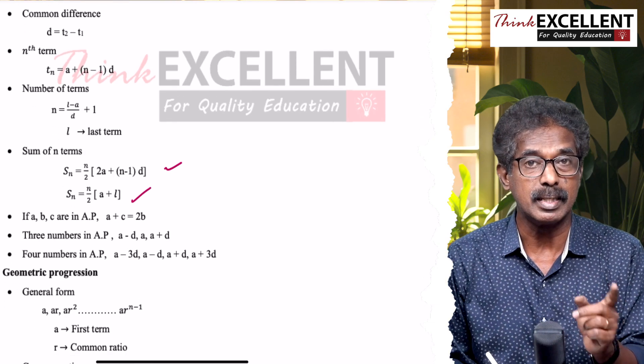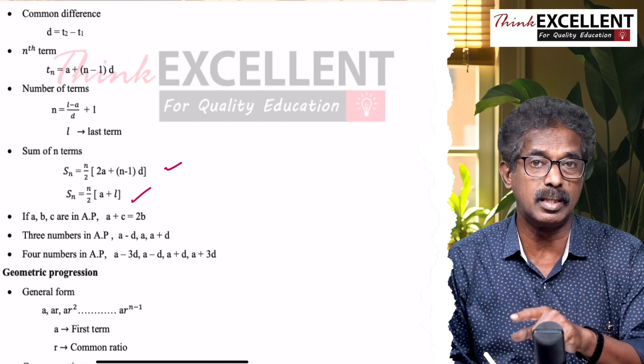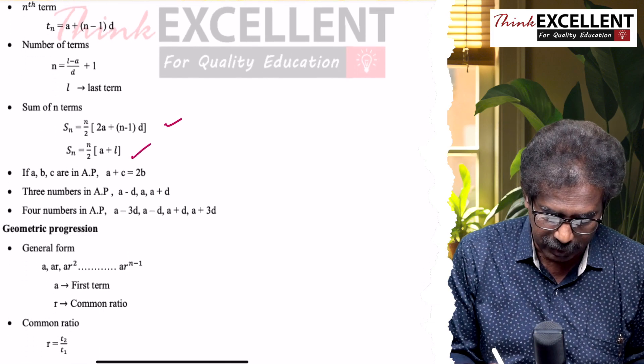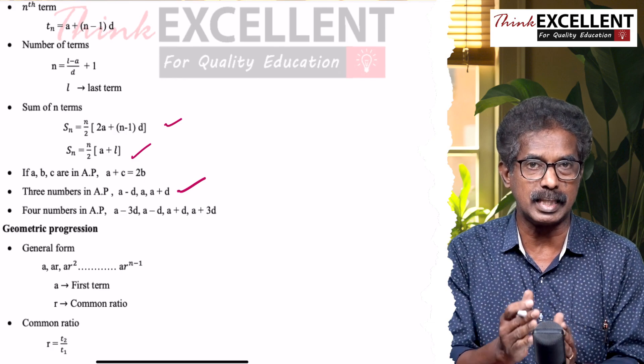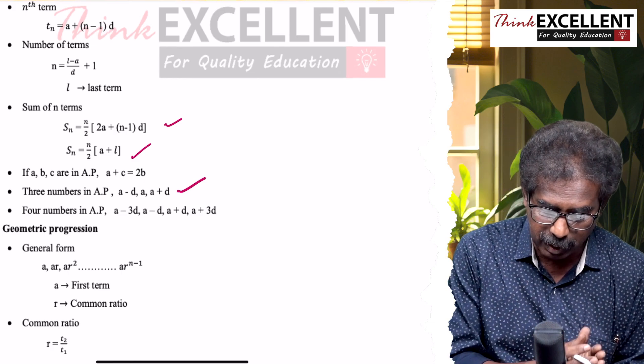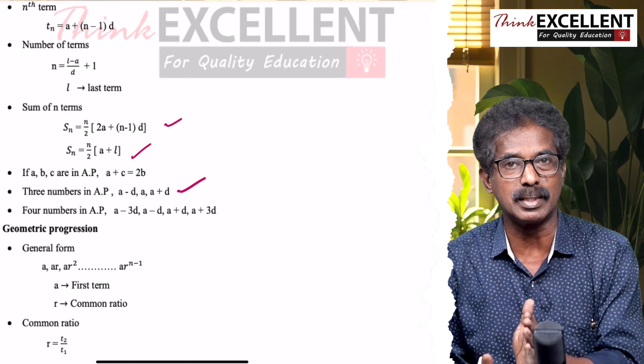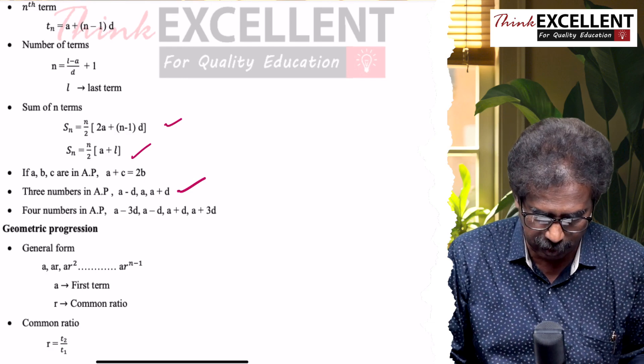Sum to n terms, there are two formulas. A and D which is one formula: n/2 × [2A + (n−1)D]. Another formula: n/2 × (A + L). Easy formula, but you know when to use. If three numbers A, B, C are in AP: A + C = 2B, first plus third equal to twice the middle number. Three numbers in AP, very important for five marks: A−D, A, A+D. Four terms in AP: A−3D, A−D, A+D, A+3D.